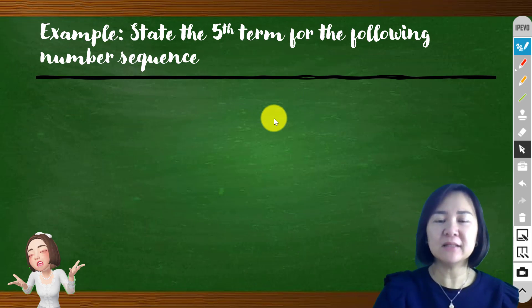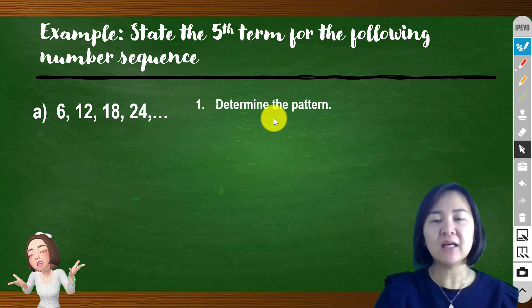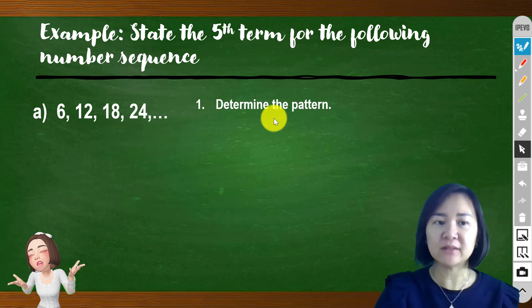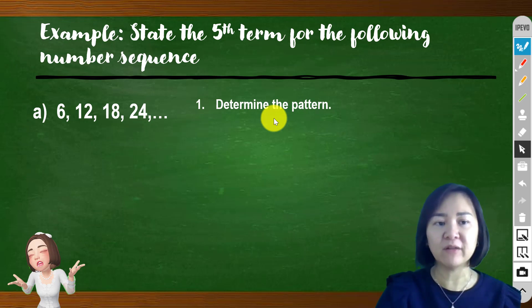The example is: state the fifth term for the following number sequence. This is the given sequence. If we need to state the fifth term, we first need to determine the pattern. From 6, 12, 18, and 24, we notice the sequence is in increasing order — either addition or multiplication. To get 6 to become 12, we can add 6.